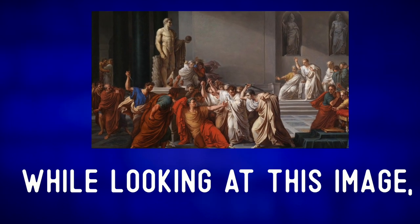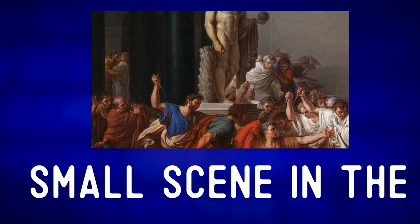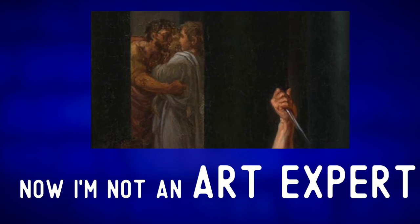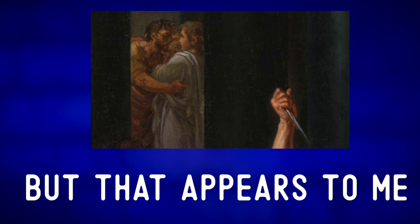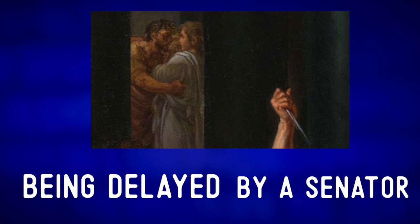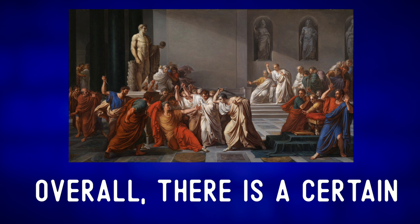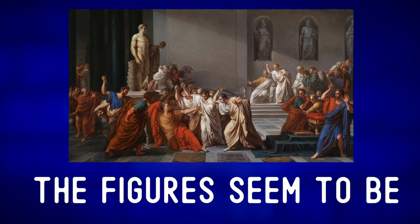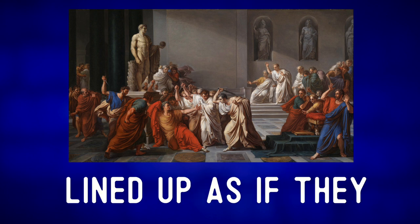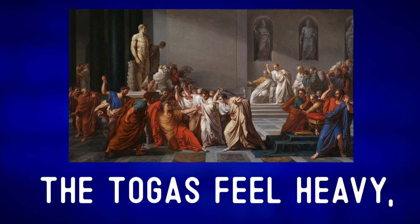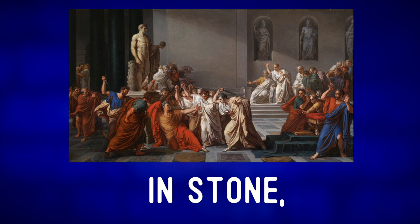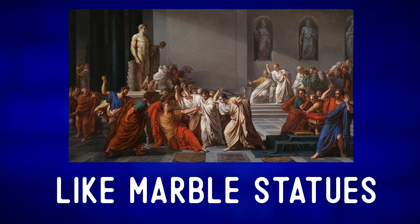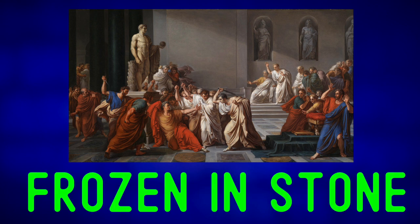While looking at this image, I also noticed this small scene in the far left of the painting. I'm not an art expert or art historian, but that appears to me to be Marc Antony being delayed by a senator. Overall, there is a certain order in this painting — the figures seem to be lined up as if they were on a stage. The togas feel heavy, and the figures almost appear to be frozen in stone, like marble statues.